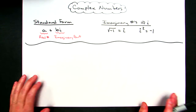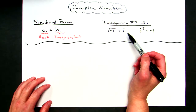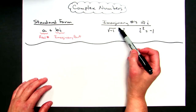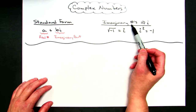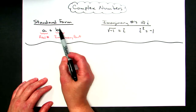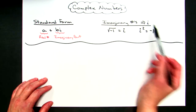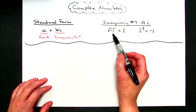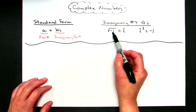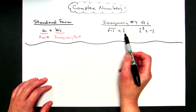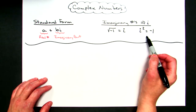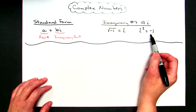Two other important things to remember when working with complex numbers: your imaginary numbers deal with i, so we are going to have to be dealing with i. A good thing to remember is that the square root of negative 1 equals i. Another good fact to remember is i squared equals negative 1.